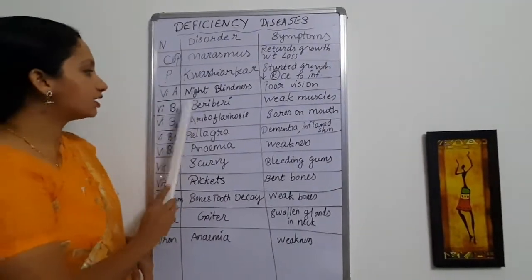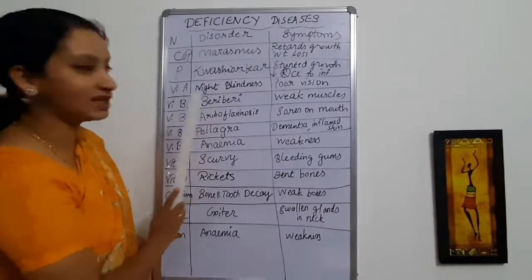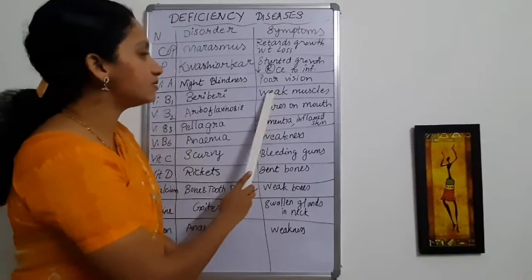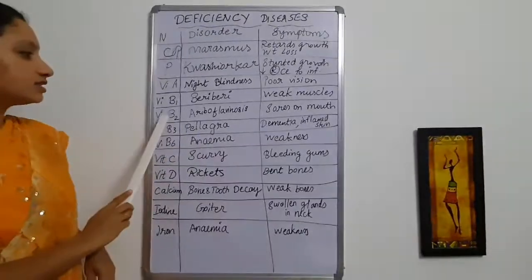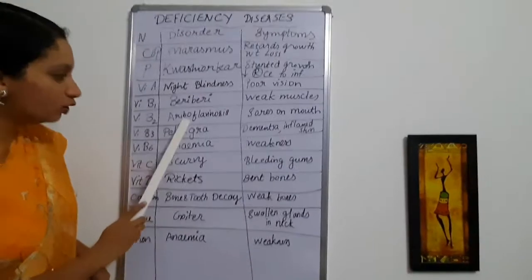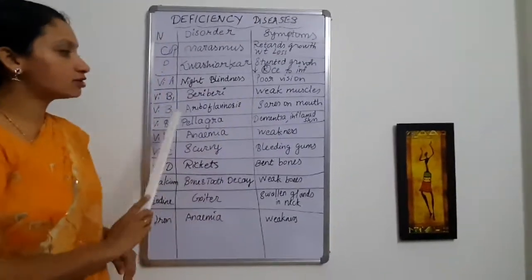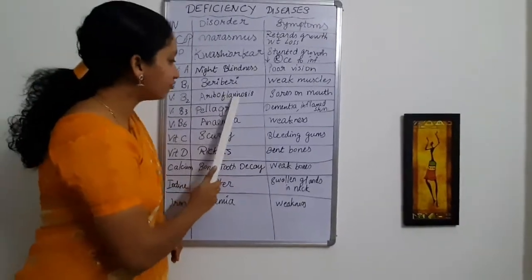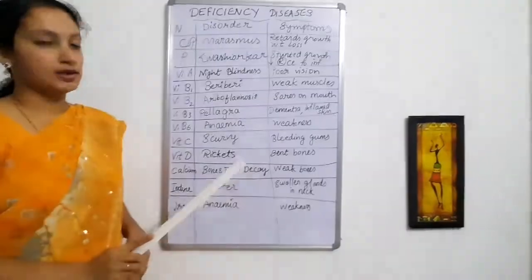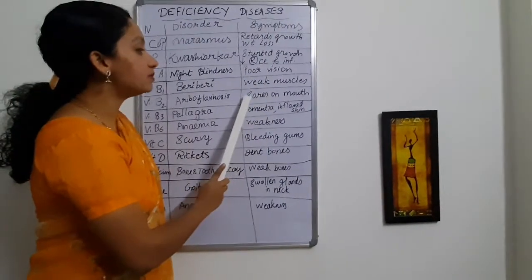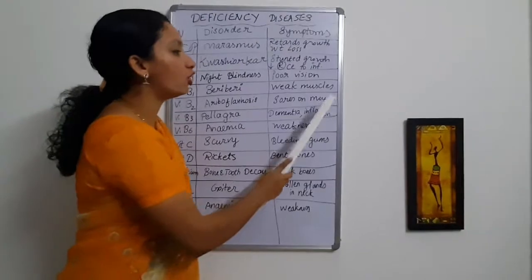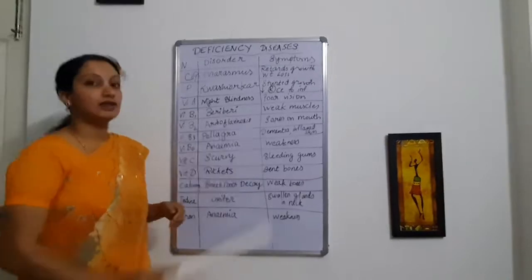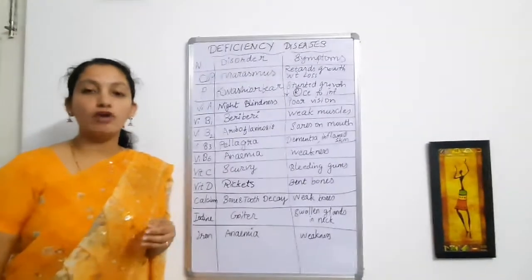Vitamin B1 deficiency causes beriberi, and the symptom is weak muscles. Vitamin B2 deficiency causes ariboflavinosis — you can split the syllable to remember that name. The symptoms include sores formed on the mouth, so you get sores on your mouth because of less intake of riboflavin, which is vitamin B2, in your diet.